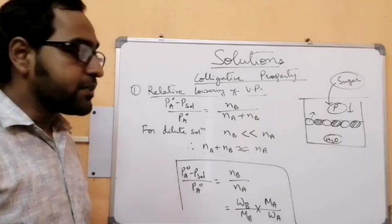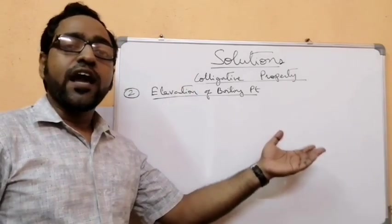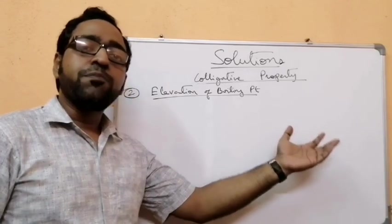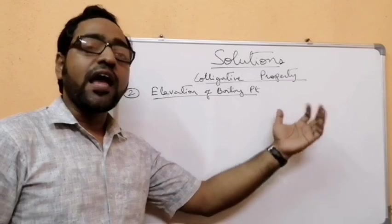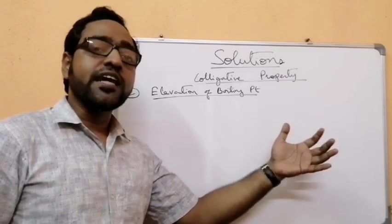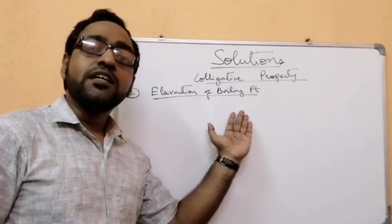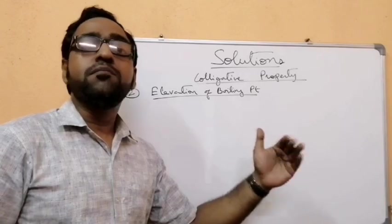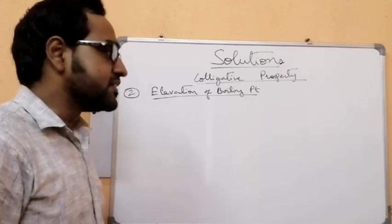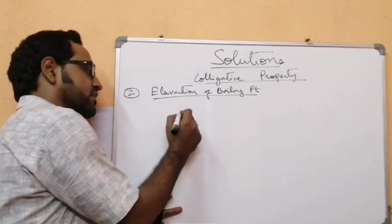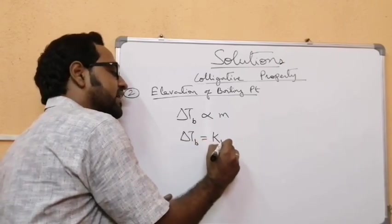Next we move on to the second colligative property: elevation of boiling point. As we add a non-volatile solute to a solvent, the vapor pressure of the solution decreases because a part of the surface is occupied by the non-volatile solute. Since vapor pressure decreases, it will take more heat to raise the vapor pressure to atmospheric pressure. The boiling point is the temperature at which the vapor pressure equals atmospheric pressure. The increase in boiling point ΔTb is directly proportional to the molality M, so ΔTb = Kb × M.